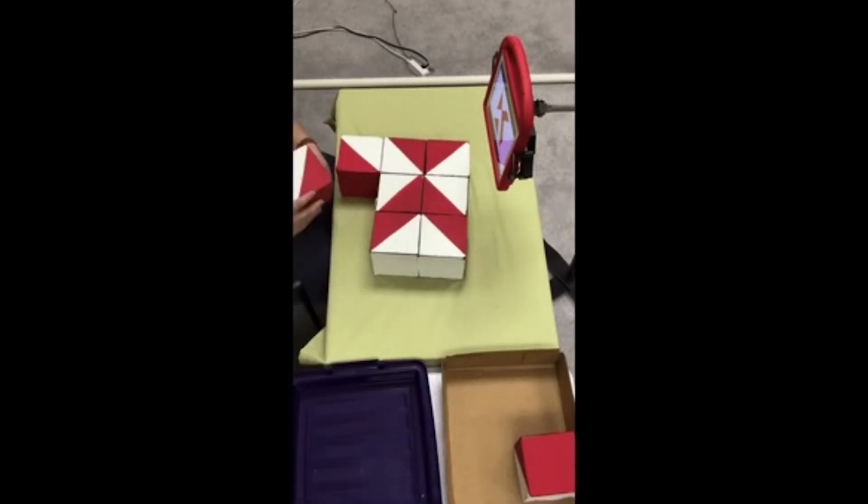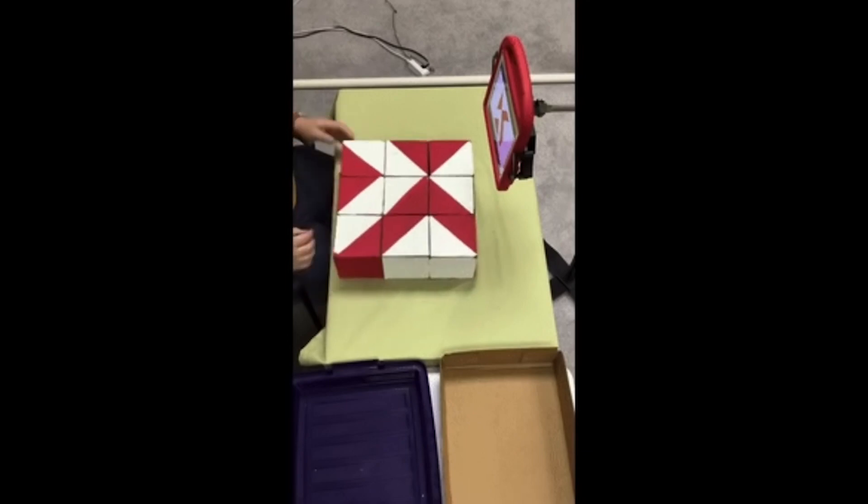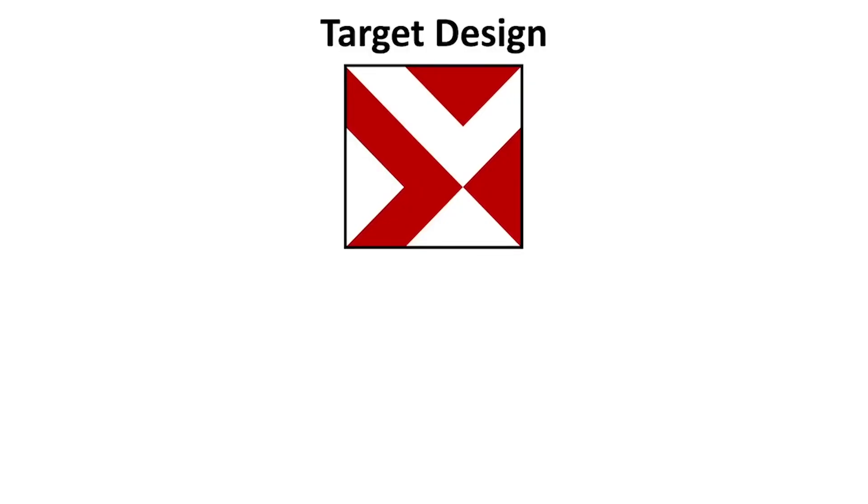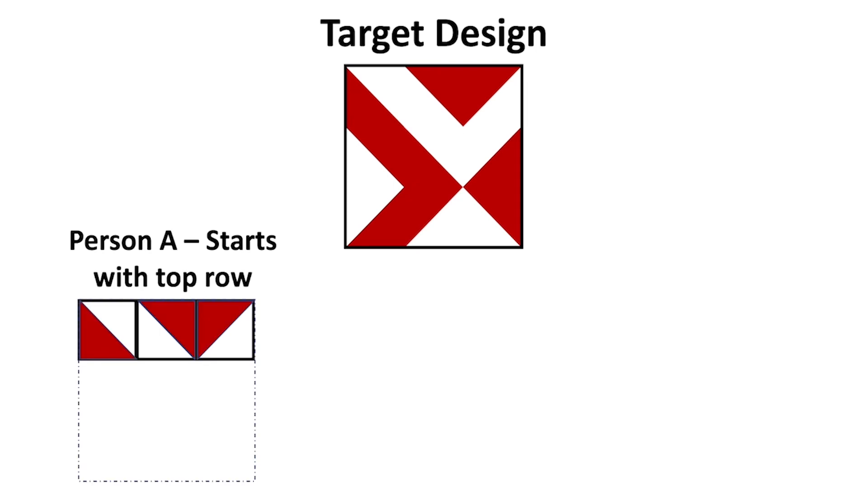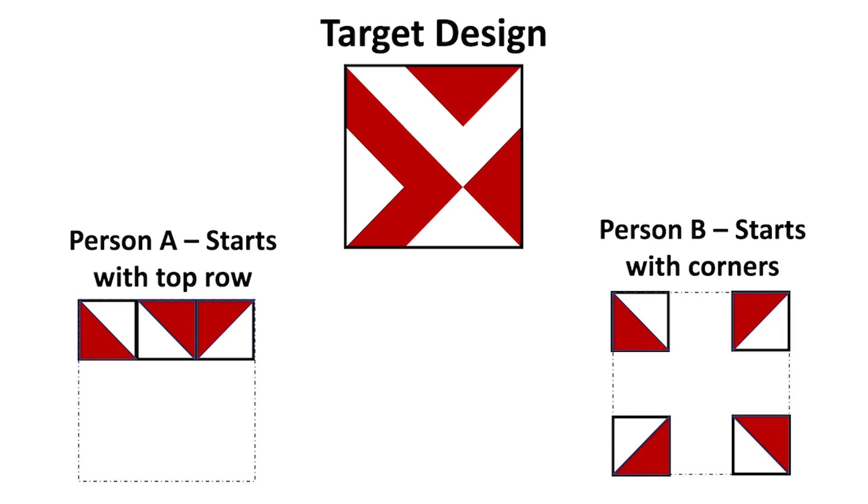And something really interesting about this task is that two people can both get the design correct, but do so in very different ways. For example, if two people are trying to copy this design, one person might start in the top left-hand corner and go across the top row. But someone else might start by putting the four corner pieces down first. And these are really interesting differences that shed light on how different people approach this spatial problem.